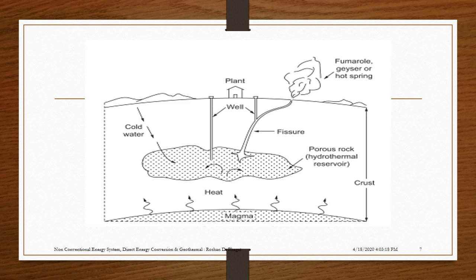A geothermal power plant has a production well and an injection well. Steam comes out from the production well. The injection well supplies water to heated rock when an underground reservoir of water is not available. The heat of the rock is utilized to heat up the water or for producing steam.